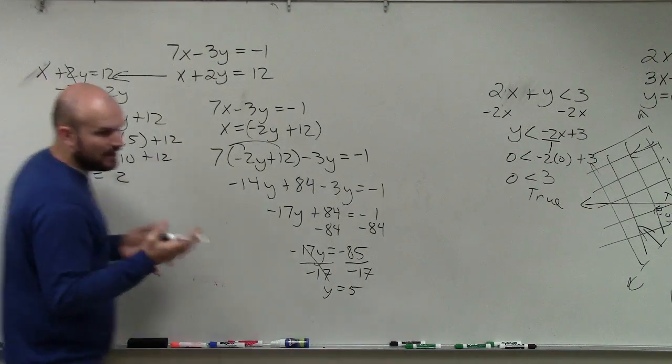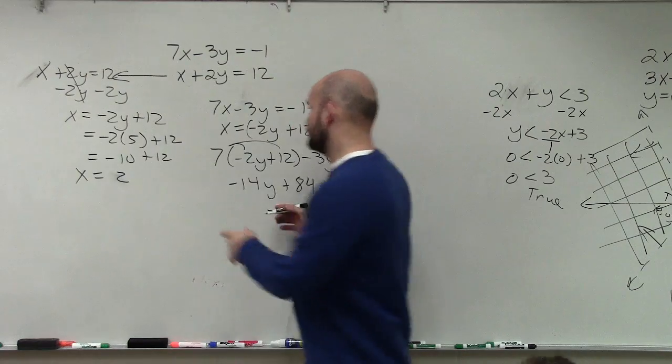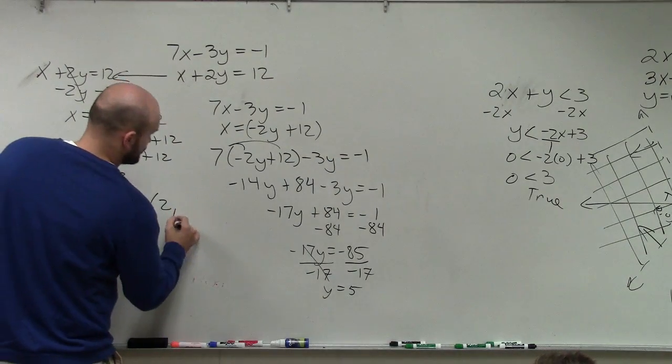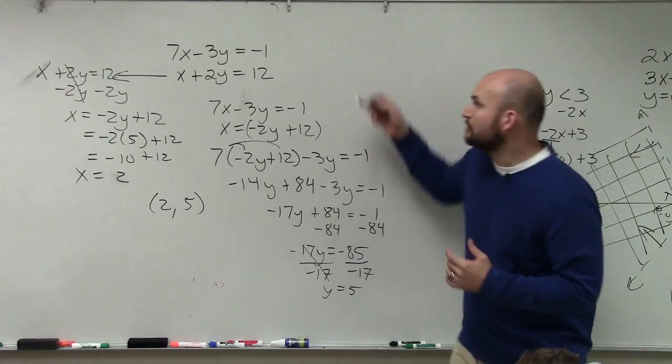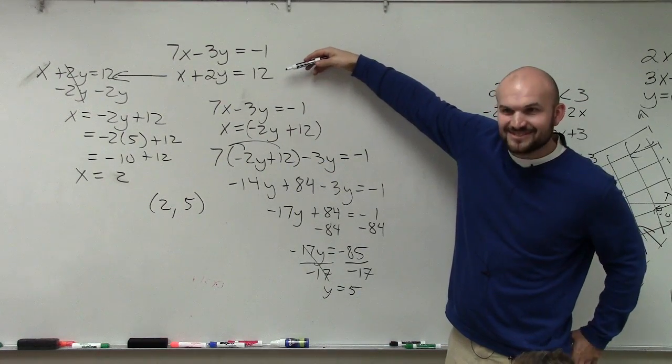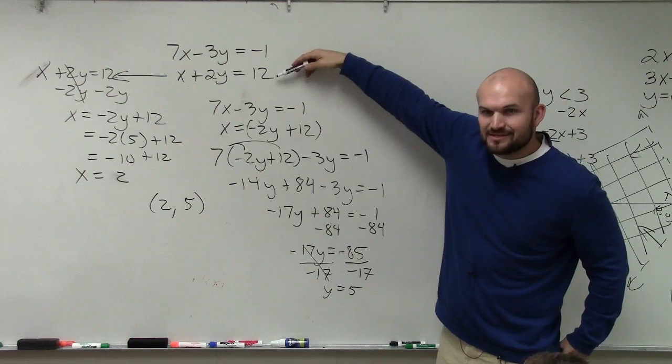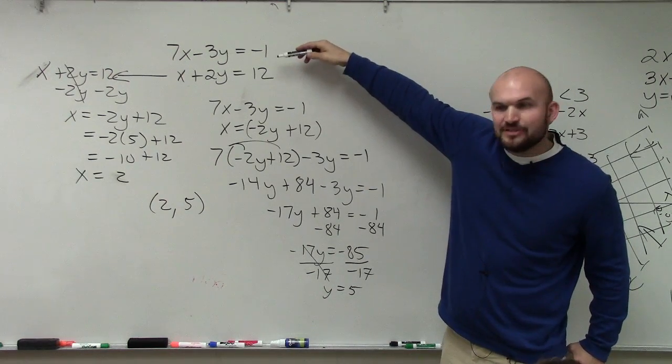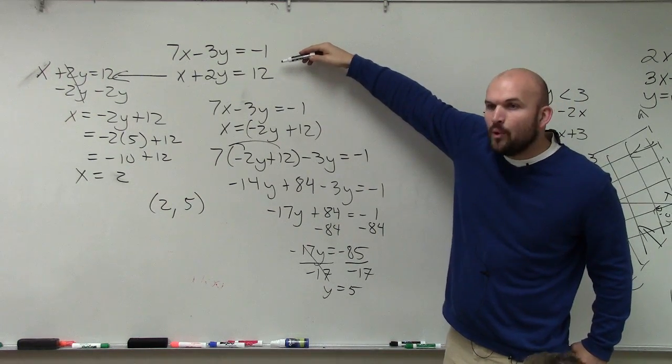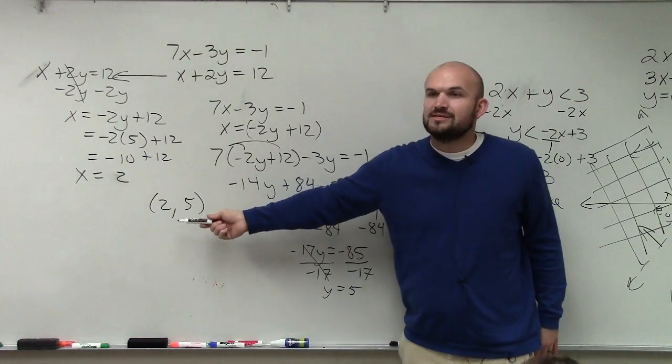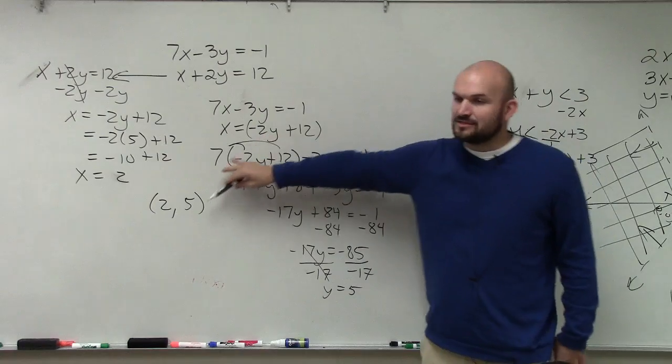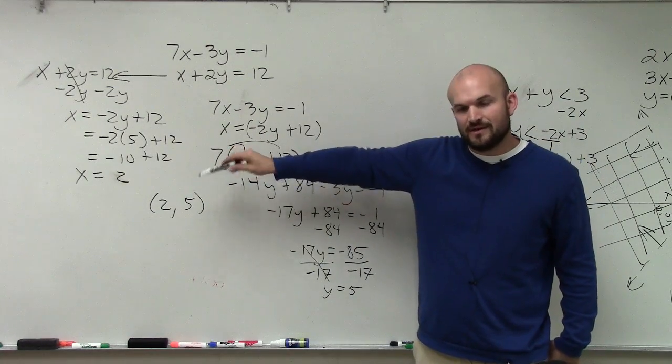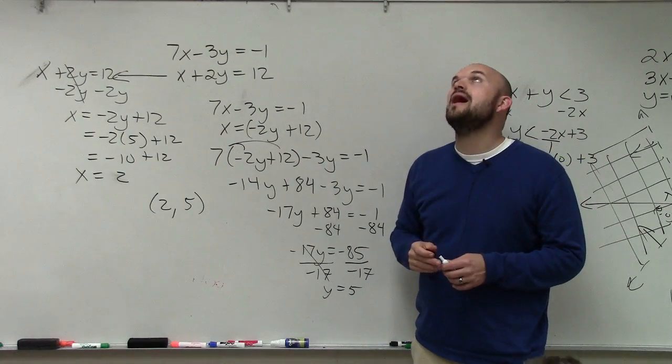And if you have x and y, you can write it as a coordinate point 2 comma 5. So going back to our original discussion, remember how we solved these last homework, for those of you that did it? We graphed these. And when we graphed them, if they intersected, they intersected at a point. And that point was the solution. Well now, algebraically, we can find the solution without having to graph them.